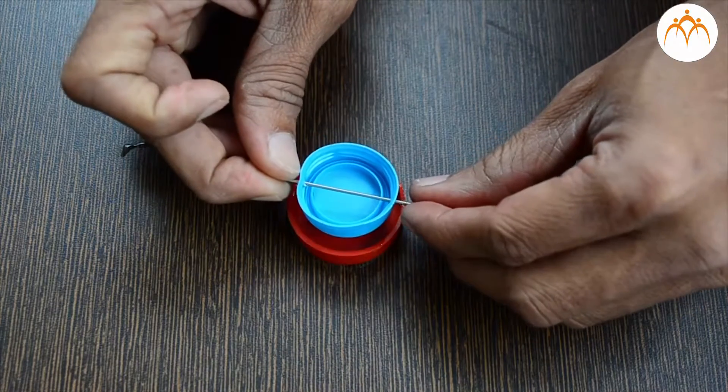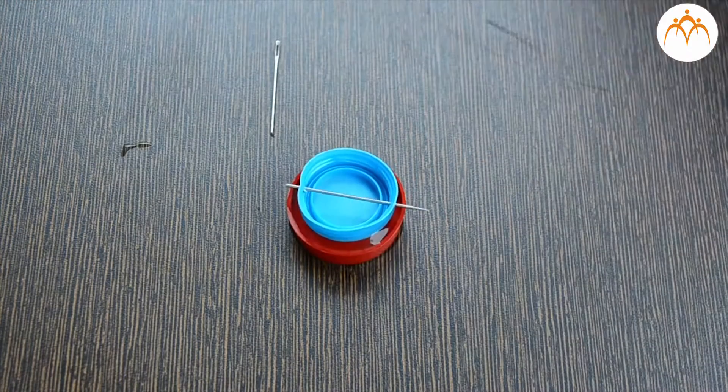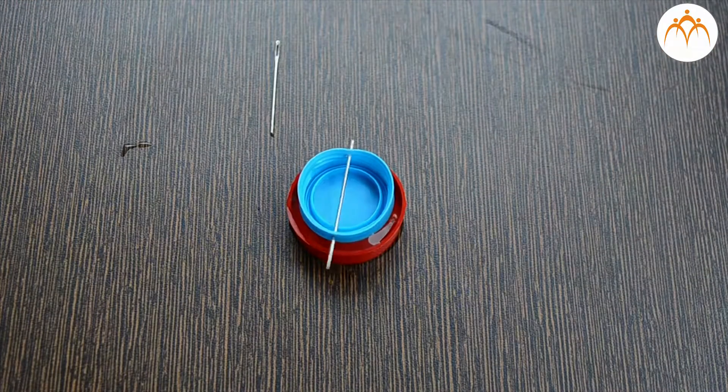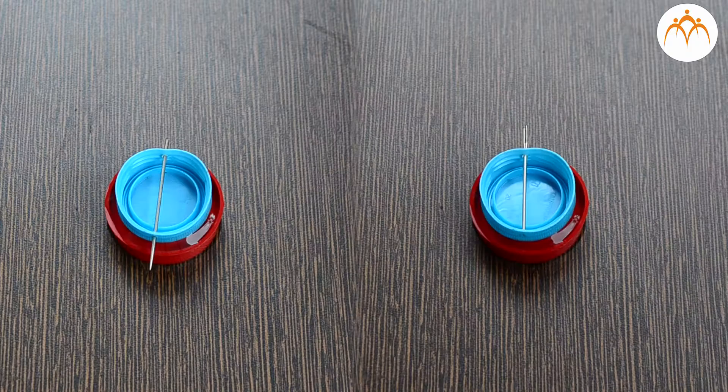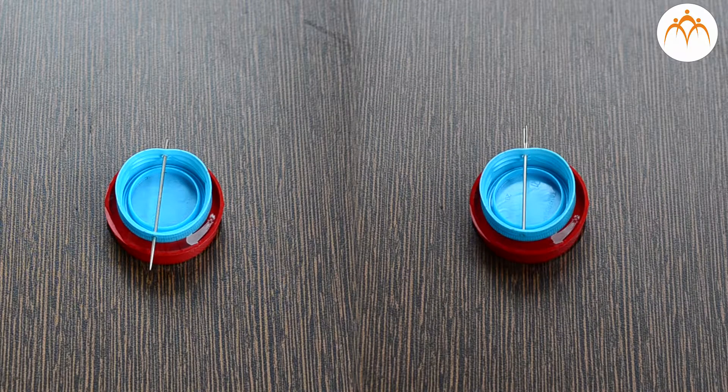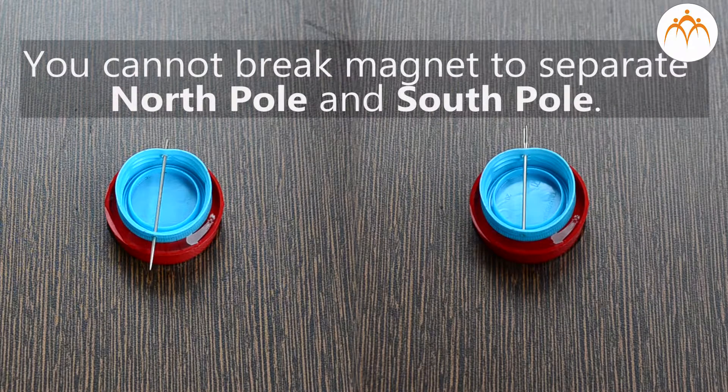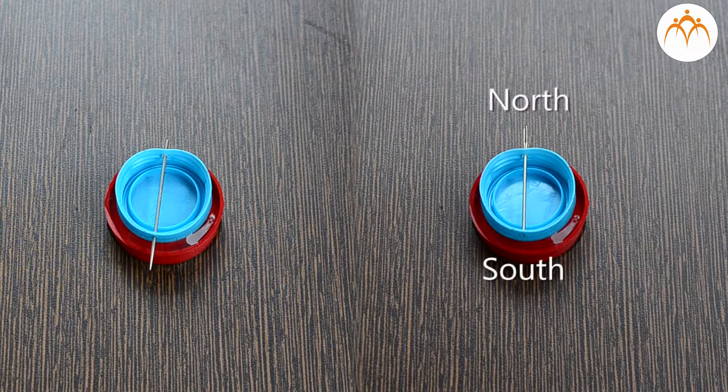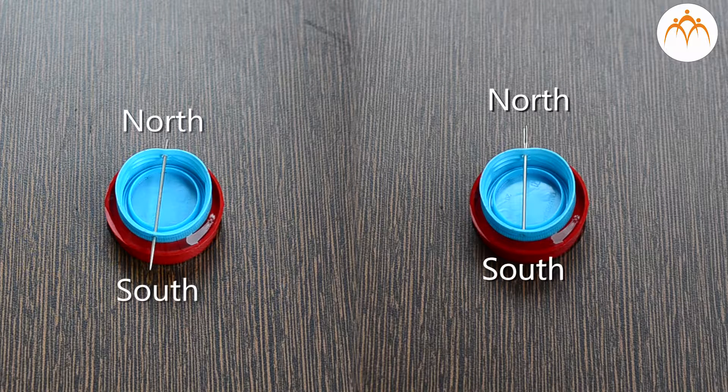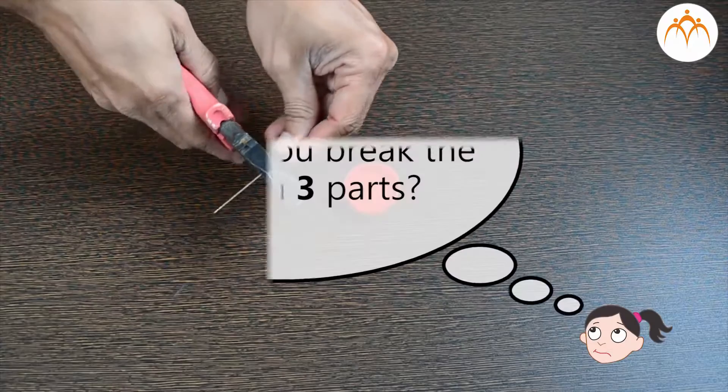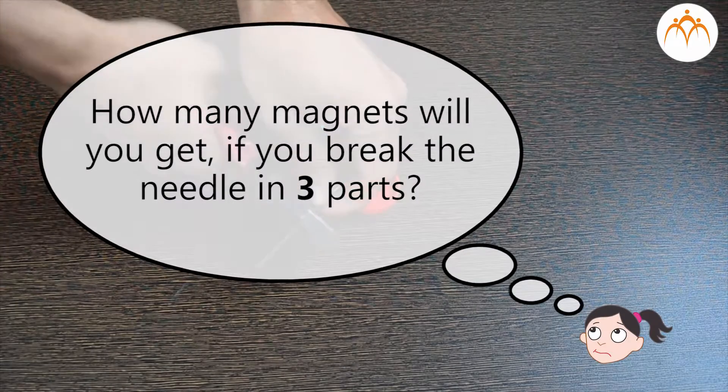To our surprise, both are acting as magnets. Instead of one single north pole and another as south pole, these two parts are acting as independent magnets. You cannot break a magnet into a separate north and south pole. If you break it, you will get two magnets. You cannot separate a north pole and a south pole. Try breaking the needle into three parts and confirm this yourself.